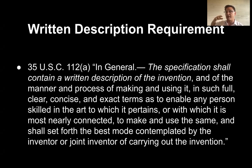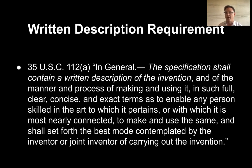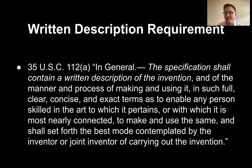In other words, the claims have to be based on the invention as initially disclosed, not the invention as subsequently developed. This also ensures that it's actually the inventor who's applying for the patent — that the invention is the product of the inventor and that the inventor is actually the one who's disclosing the information to the patent office, and by extension to the world.